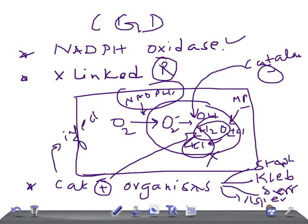To test for this, failure of phagocytic cells to generate oxygen radicals is detected by the nitro blue tetrazolium (NBT) test, also known as the neutrophil oxidative index. That's it about CGD — thank you so much for watching, take care.